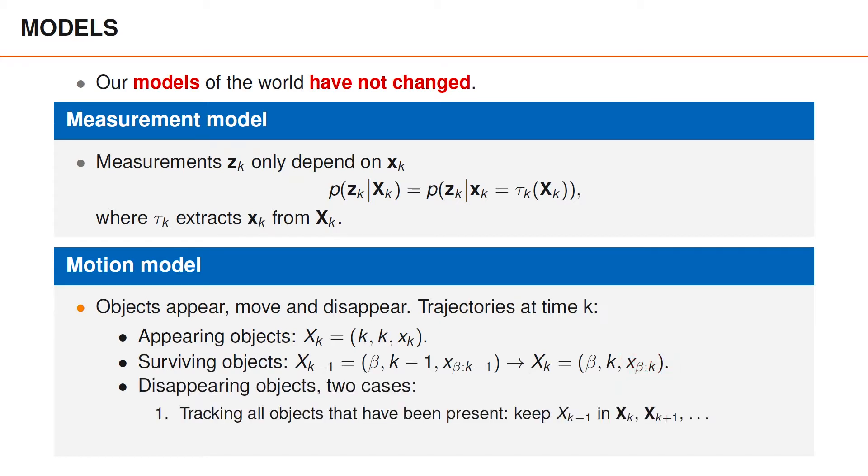Finally, objects may disappear between time k-1 and k. If we are trying to estimate the trajectories of all objects that have ever been present, the trajectory capital xk-1, that ended at time k-1, will appear in all future sets of trajectories, capital boldface xk, xk+1, and so on. And since the trajectory has ended, it will never change again. Another possibility is that we are only estimating the trajectories of all objects that are present at time k. In that case, all trajectories that end are removed from the set of trajectories and will be ignored from then on.